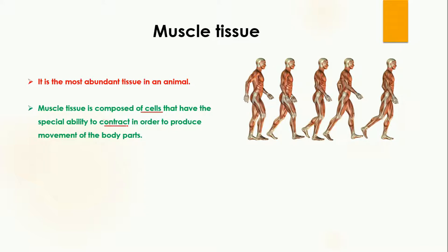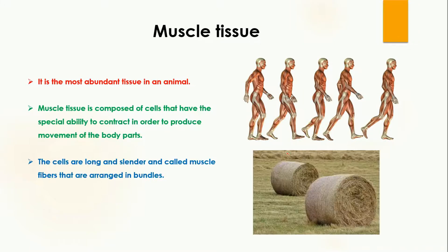When these cells are contracting, they are actually helping in the movement of body parts. Here in this diagram you can see these are the muscle tissues, and because they are attached with the bones they are going to contract, and because of this contraction the movement of the body will take place.